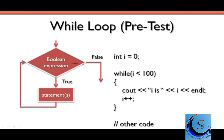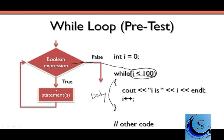This Boolean expression part is just simply this part right here in parentheses. So we have: while, open parentheses, i less than 100, close parentheses. This is just our Boolean expression — the thing we want to test to see if we can enter into the body. All of this right here is defining the body of our while loop, inside the open brace and close brace. Basically we have a variable i, and it's been initialized to the value of zero.